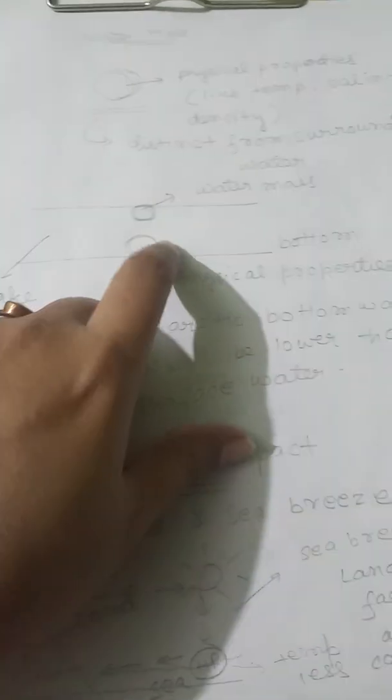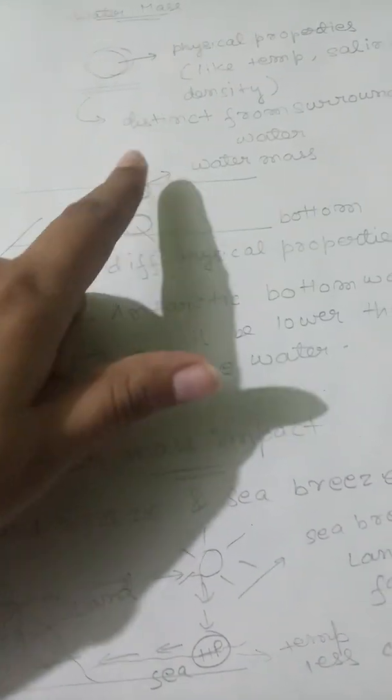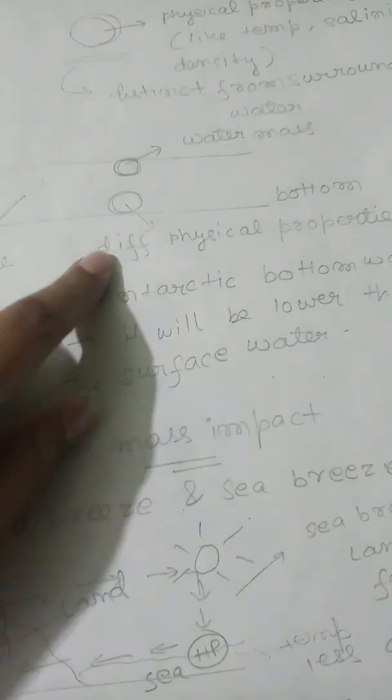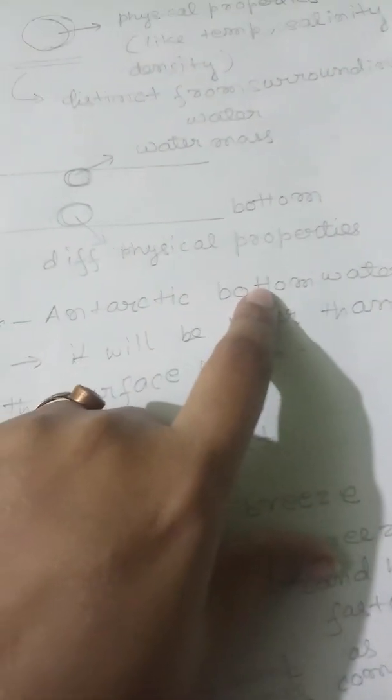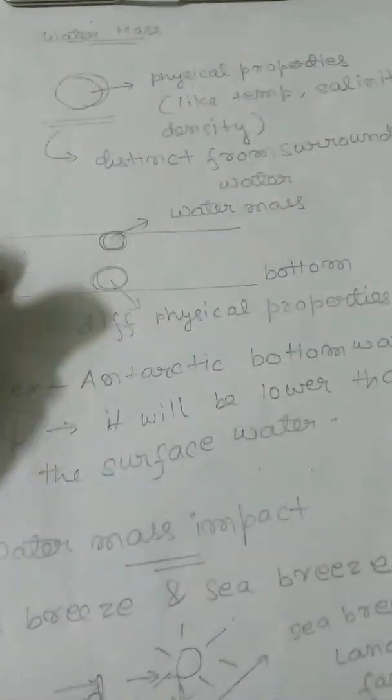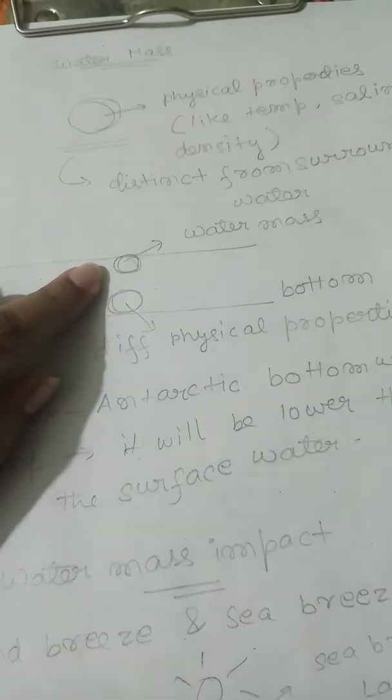Suppose this is the bottom of a lake, and here we are taking a water mass which has different physical properties like different temperature, salinity, and density.